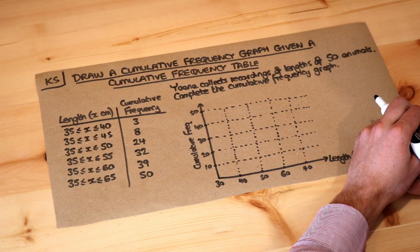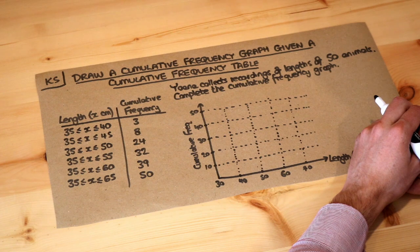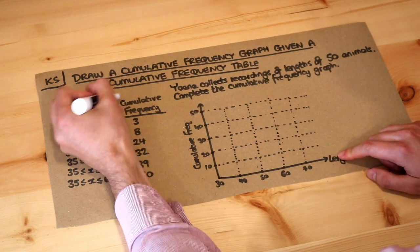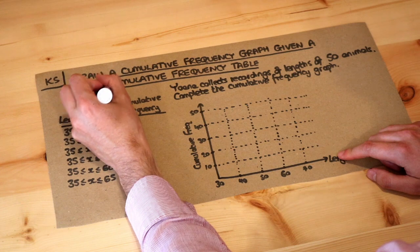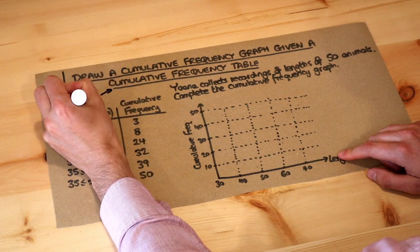Hello and welcome to this Dr Frostmaths key skill video on drawing a cumulative frequency graph given a cumulative frequency table. Now what does the word cumulative mean? The word cumulative just means running total.